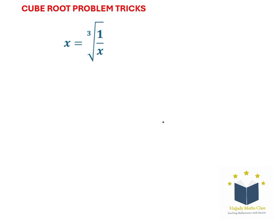Now, by doing this, the first thing I'm going to do is that I'm going to cube both sides. So here I'm going to have this cube root of 1 over x cubed.